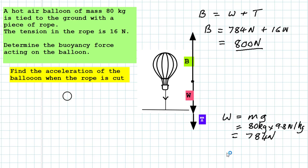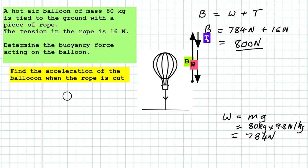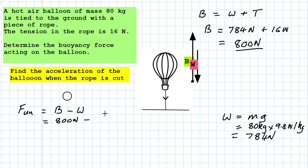Looking at our diagram with the forces in the nose-to-tail position, if we cut the rope we are removing the tension force, so we have an unbalanced force. The unbalanced force equals the buoyancy force take away the weight force. The buoyancy force is 800 newtons and the weight is 784 newtons, giving an unbalanced force of 16 newtons. You can see why the tension holds the balloon stationary — the tension of 16 newtons acting downwards cancels out that unbalanced force.